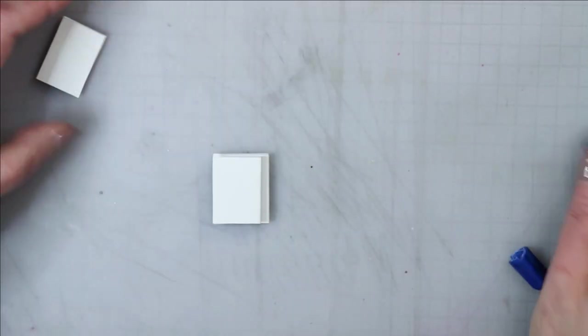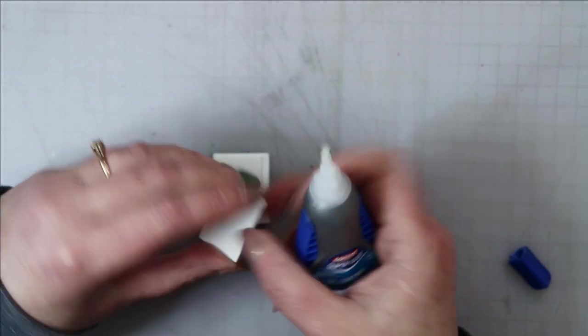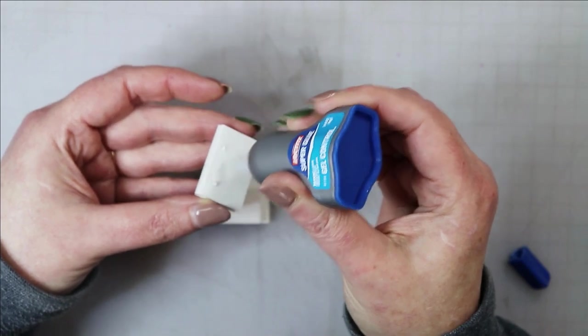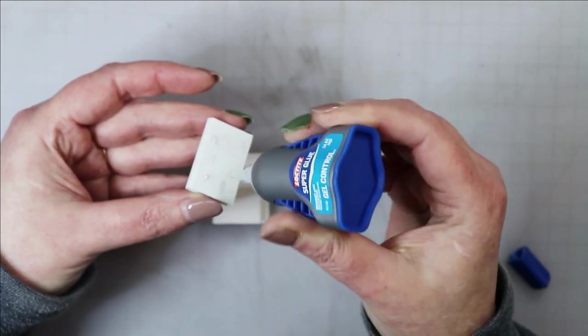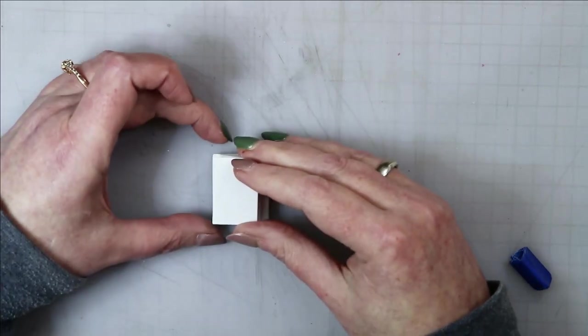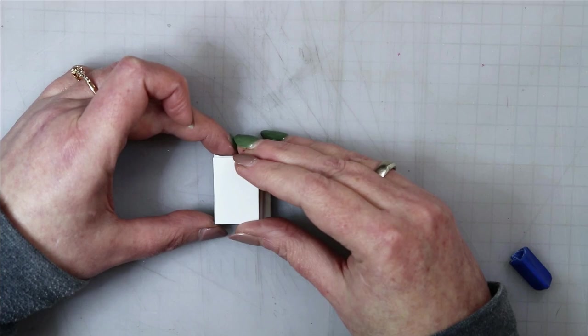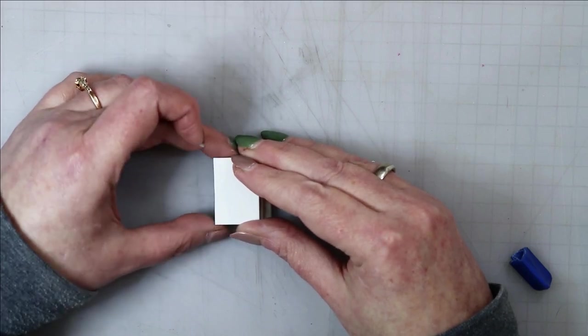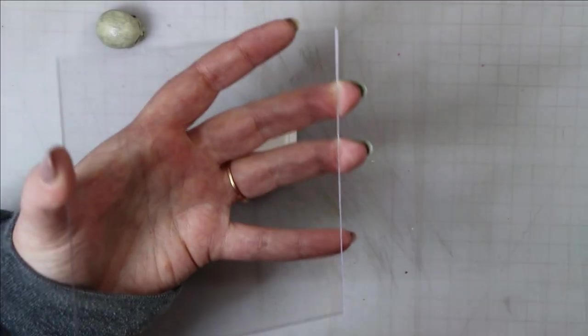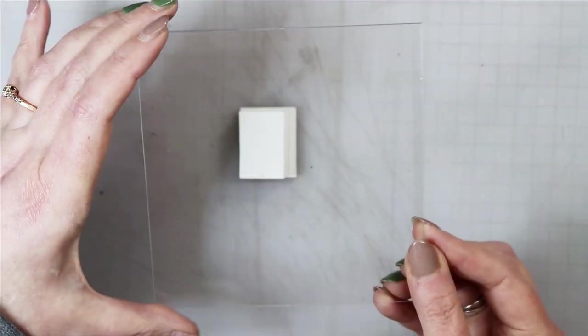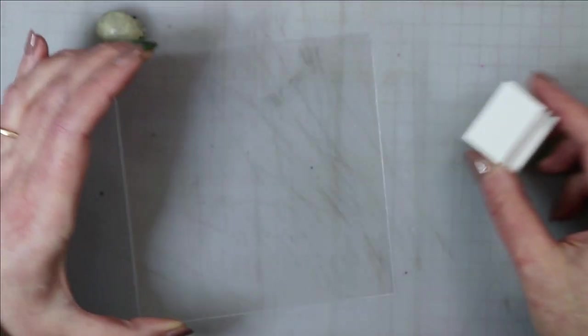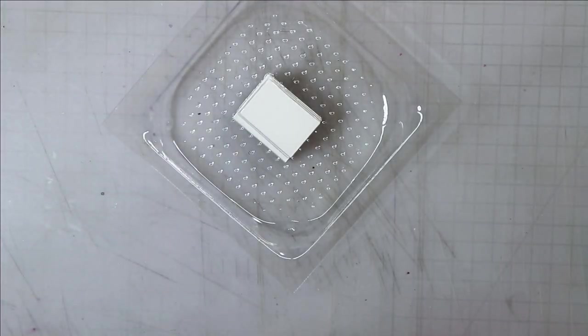One, when you're vacuum forming anything, take the object that you're using as your form and raise it up off of the bed of the vacuum former just a little bit. I do this with poster putty. What you're trying to accomplish is to allow the plastic to wrap around the bottom of your object a little bit so that when you cut it off you get a nice clean edge.